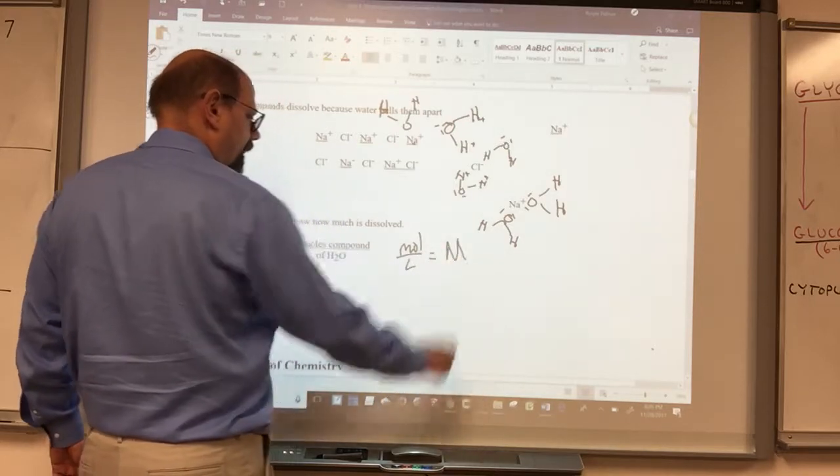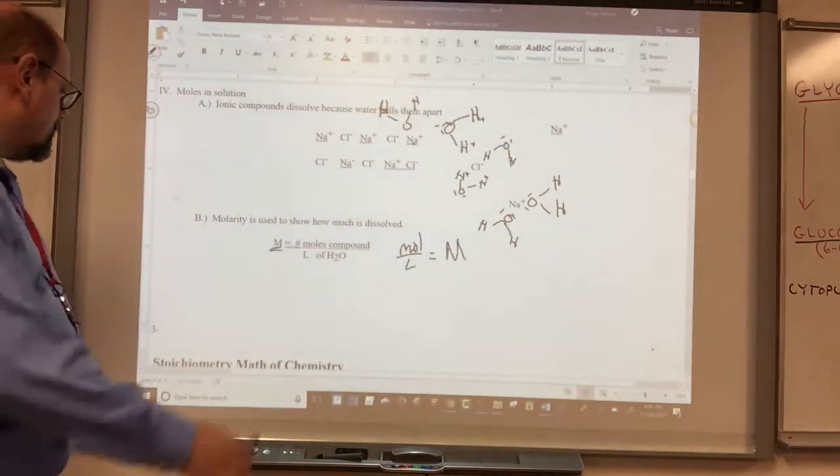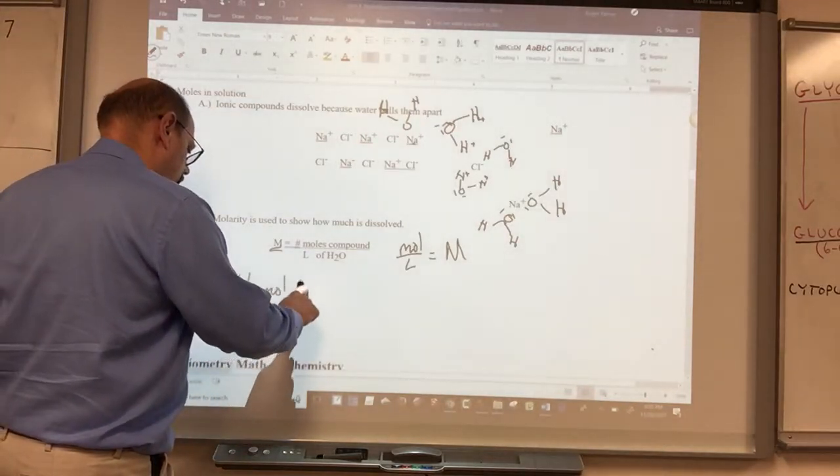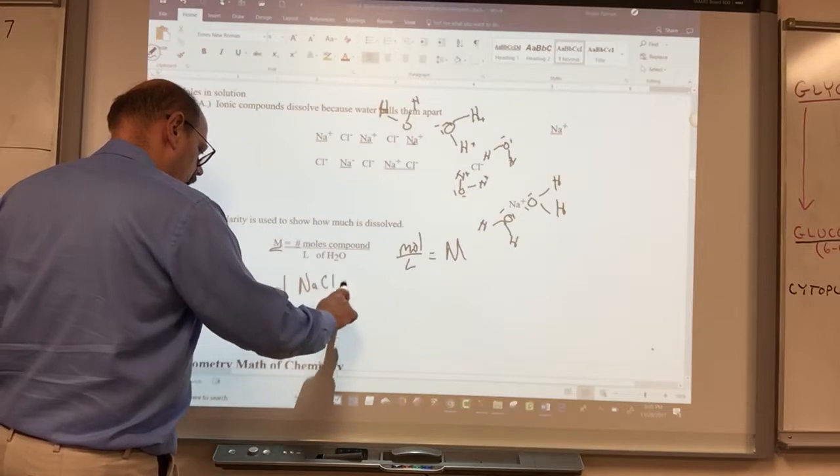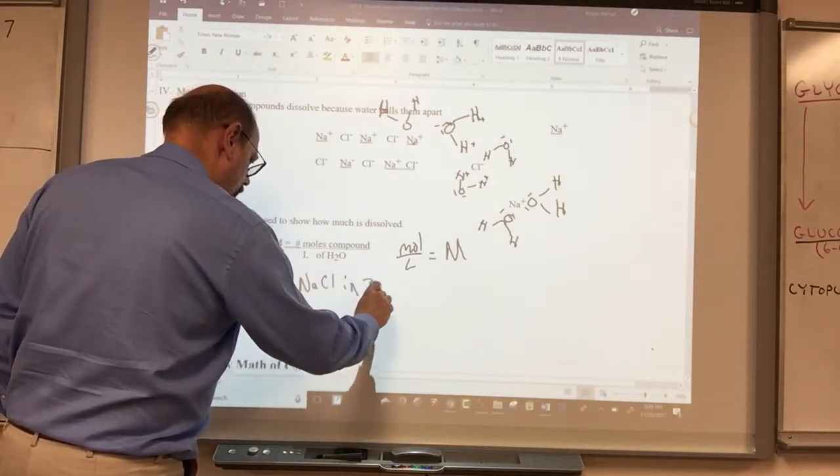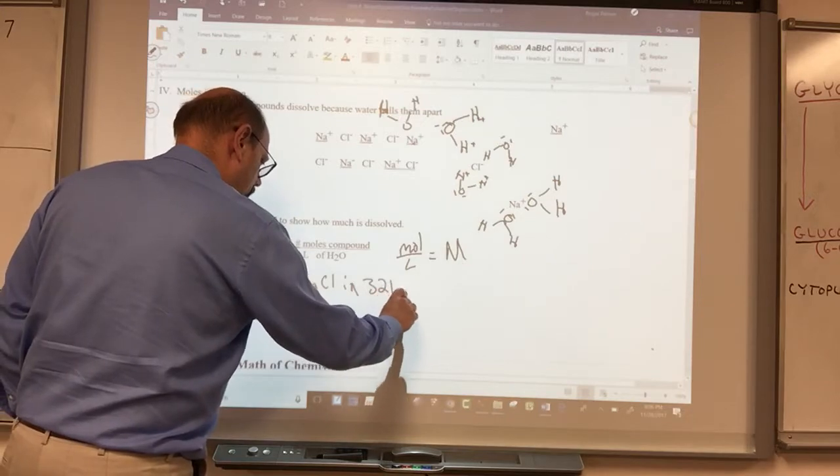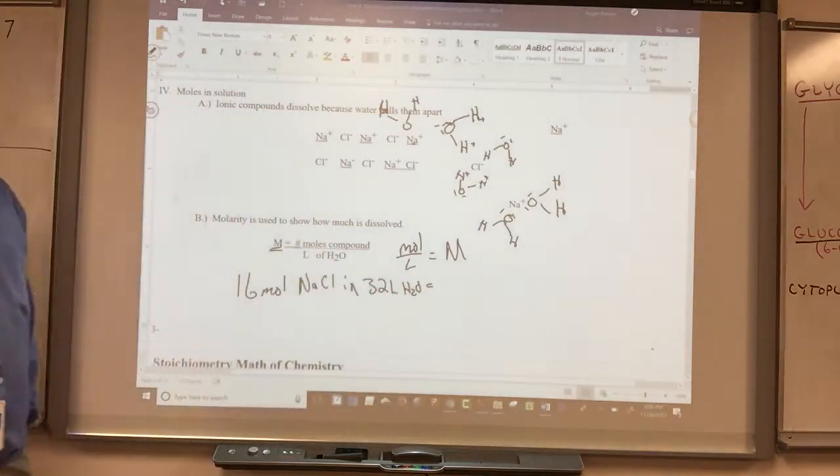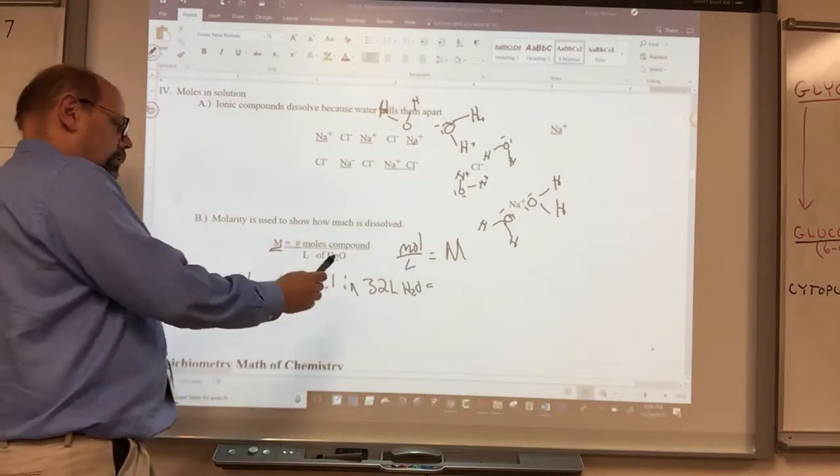Those are going to be given the symbol M like that. So if I have 16 moles of salt in 32 liters of water, it's really just straightforward to say what's the concentration of that salt solution.